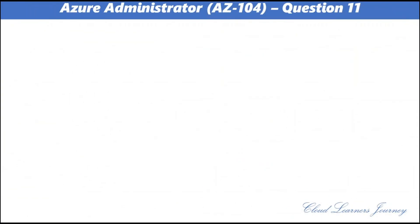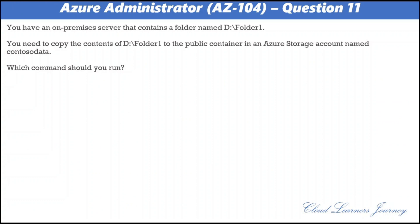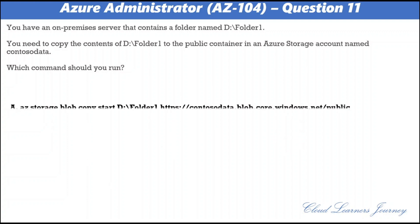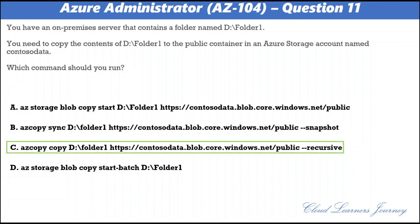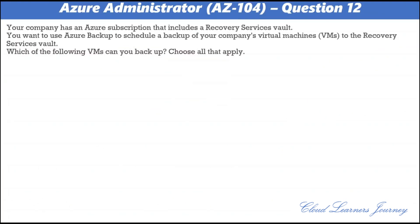Question number eleven. You have an on-premises server that contains a folder named D-folder-one. You need to copy the content of D-folder-one to the public container in an Azure storage account named contresor.data. The correct command uses az storage blob copy start with D-folder-one, the URL https://contresor.data.blob.core.windows.net/public, with the recursive flag.